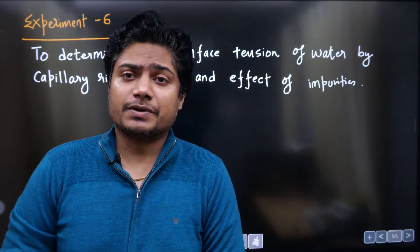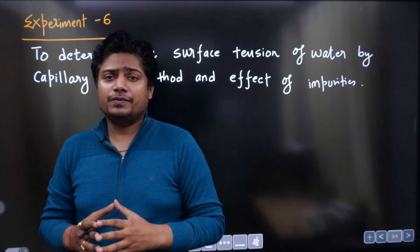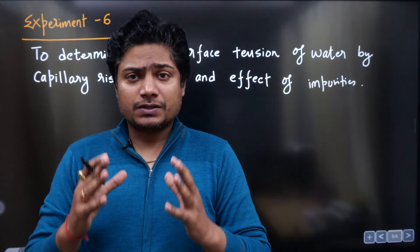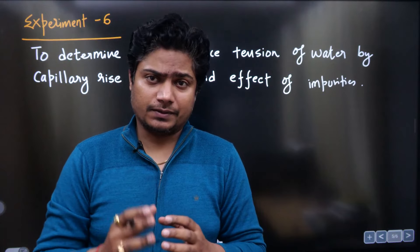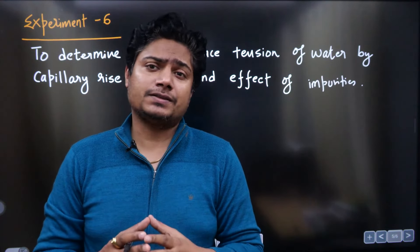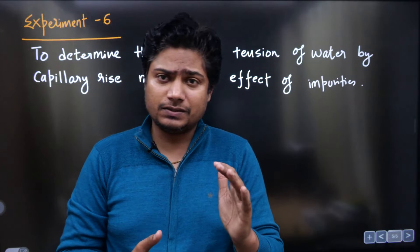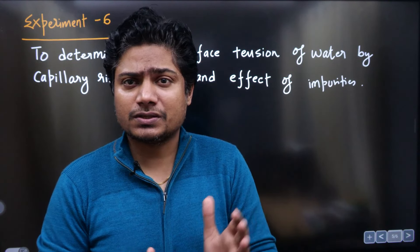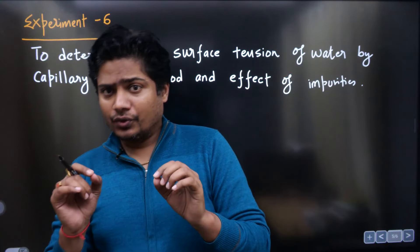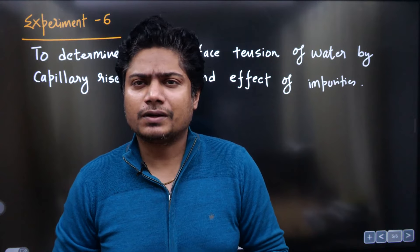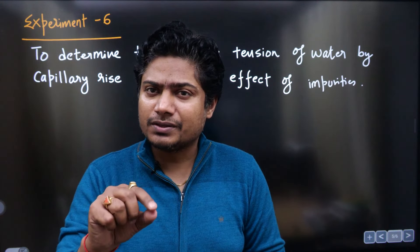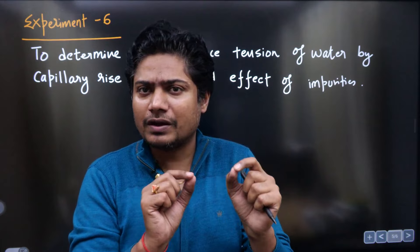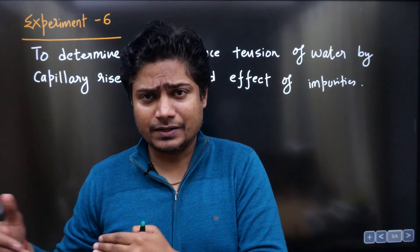Let us discuss experiment number six. In this experiment we have to determine the surface tension of water using the capillary rise method. What is done is we observe the rise of water in a capillary tube using simple apparatus. The theory is simple — we use the height of capillary rise formula to determine the surface tension, and put all the values into that formula using the given instrument measurements.